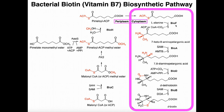The first cytoplasmic enzyme is BioF. What it does is remove this ACP sulfur and attach onto it the alpha carbon of alanine — you can see the methyl group (the R group of alanine), the amine, and the alpha hydrogen have been added to that carbon atom. That gives us the molecule 7-keto-8-aminopelargonic acid.